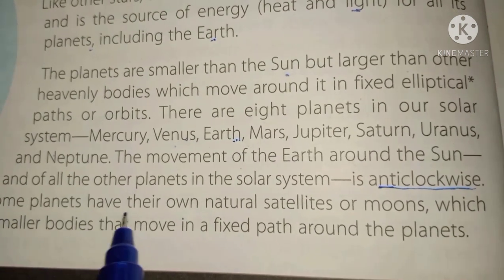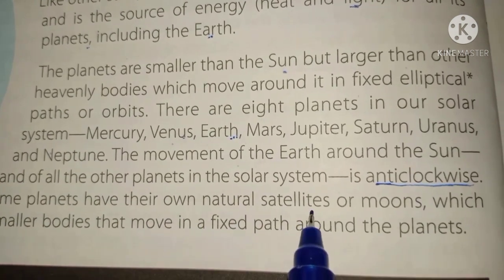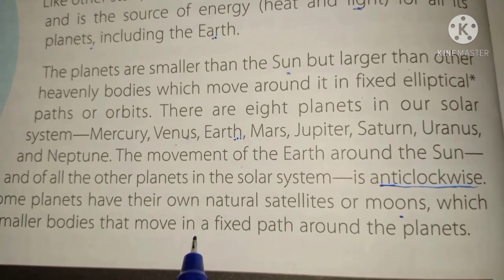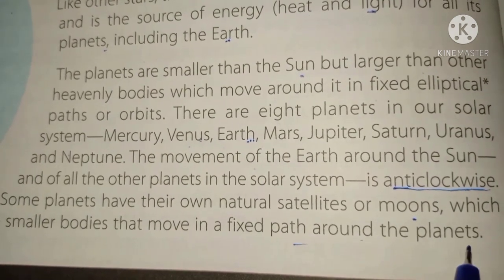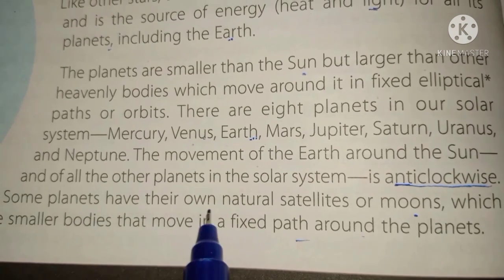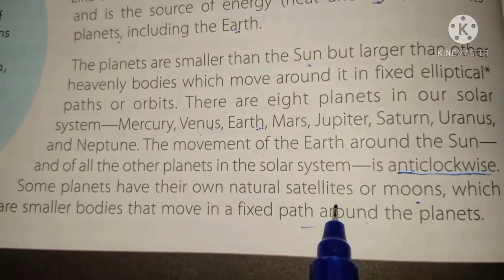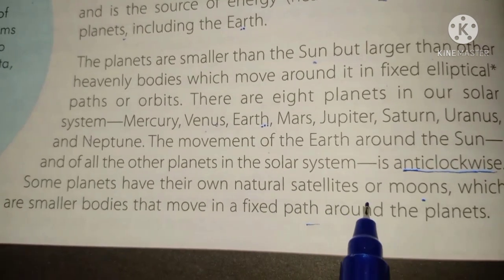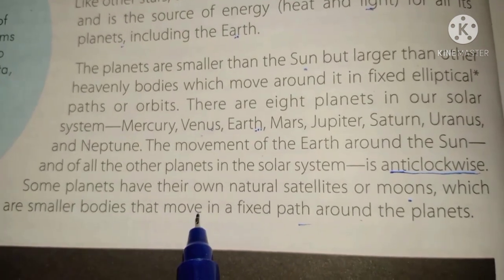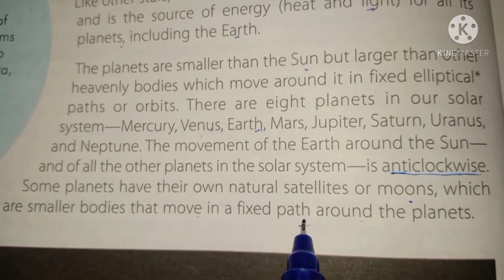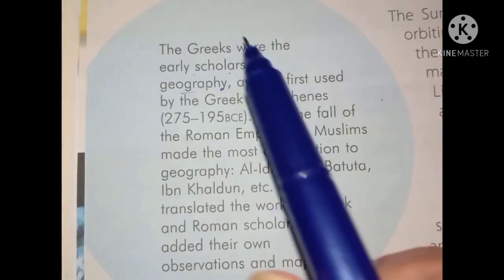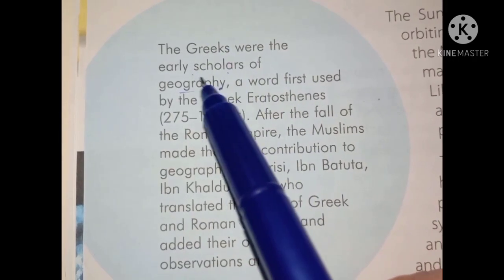Some planets have their own natural satellites or moons, which are smaller bodies that move in a fixed path around the planets. For example, our earth has its own natural satellite, the moon, which moves in a fixed path around the earth.